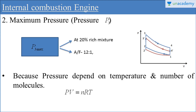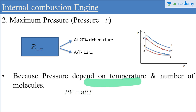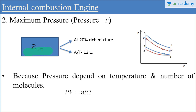The next condition is maximum pressure, also considered at point 3. As per the relation PV = nRT, pressure always depends on temperature as well as the number of molecules. For the constant volume fuel air cycle, maximum pressure is attained when the mixture is 20% richer than the chemically correct mixture. The air fuel ratio at that point should be 12:1, and maximum pressure will be maximum at the 20% rich mixture.